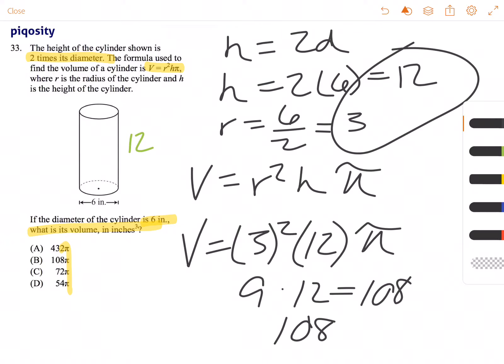So 108 pi is the volume of this cylinder, and answer choice B is the only one that matches.